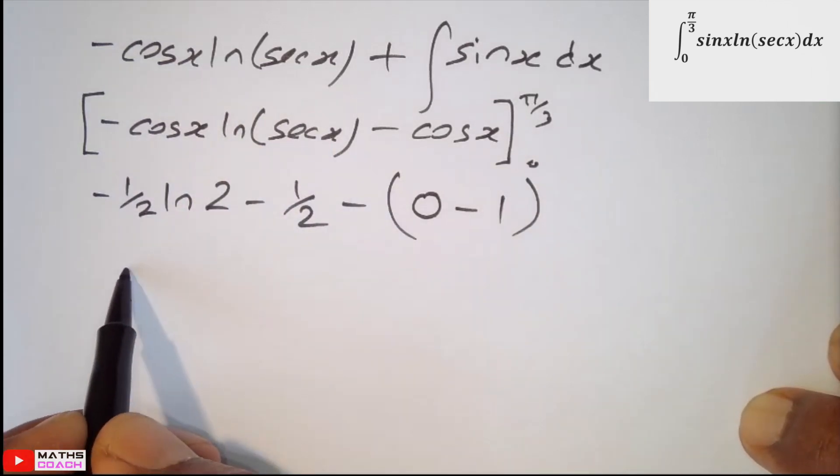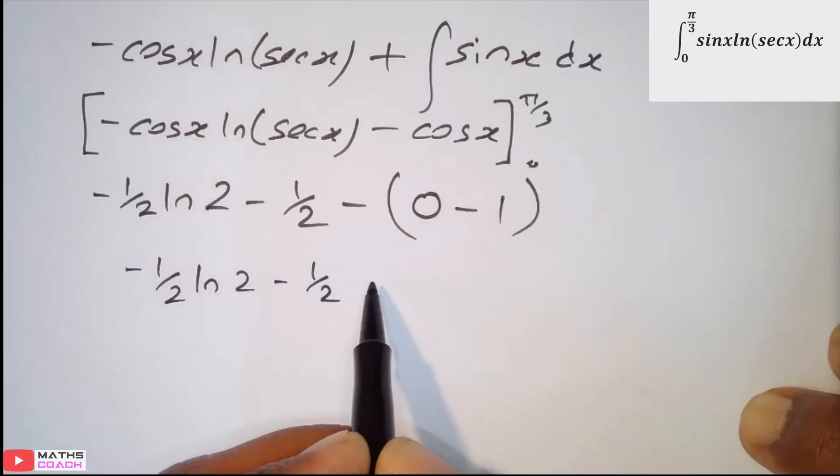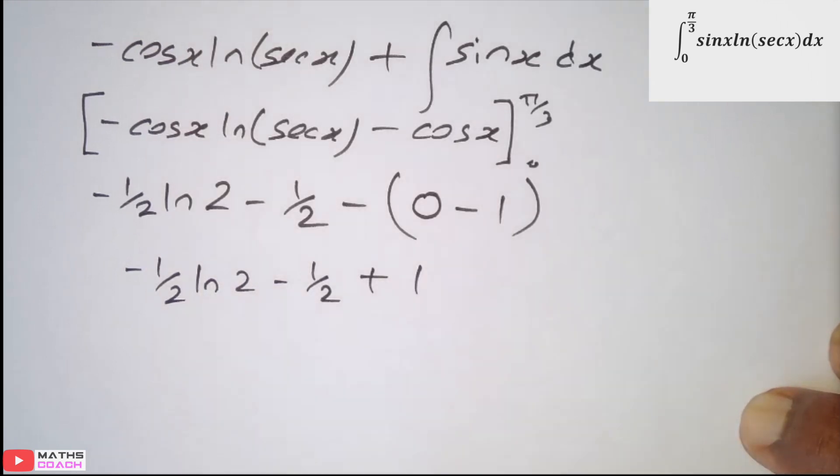Let's just finish this off. We have minus half ln 2. Minus half. And we end up with plus 1. Negative and a negative. Tidying that up. We have negative half. Add 1 is half. So, we can end up with half minus half ln 2. And that should be the answer to that challenging question.